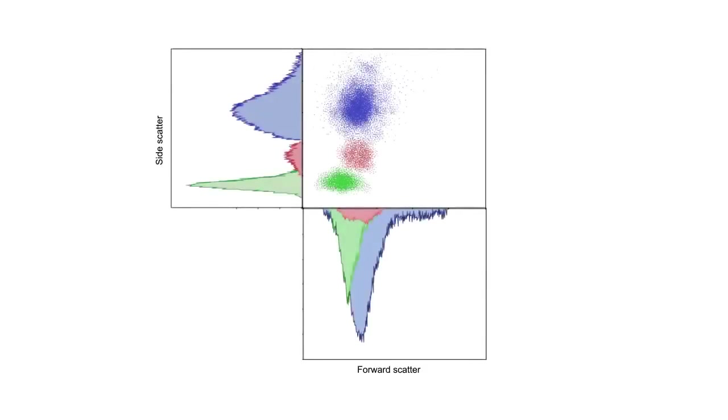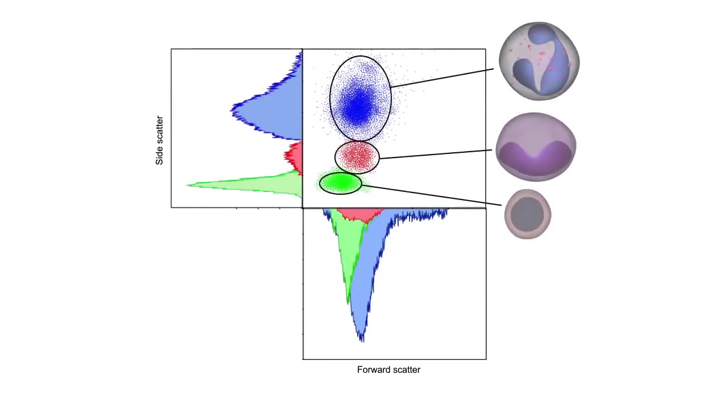In addition, the analysis of the forward and side scattered data can allow the researcher to divide the heterogeneous population of cells into individual populations with varying size, shape, and complexity.